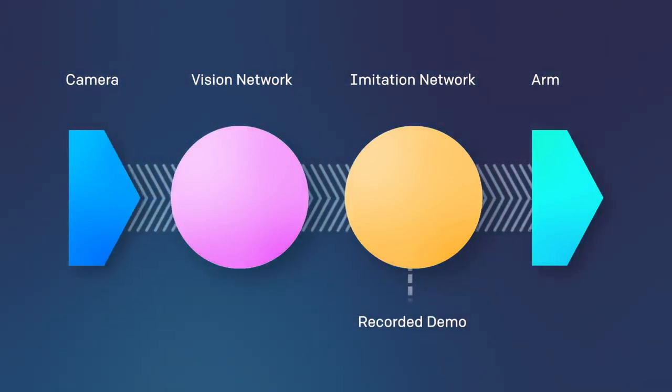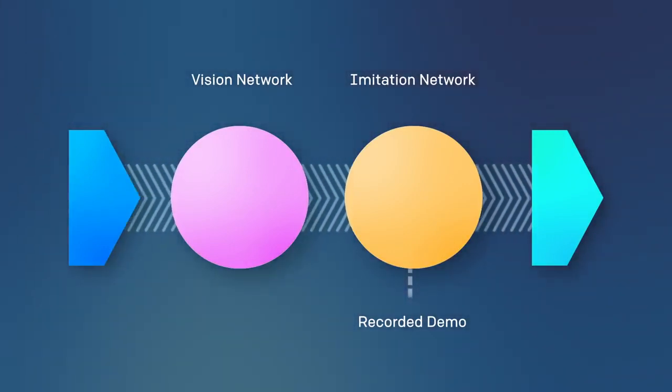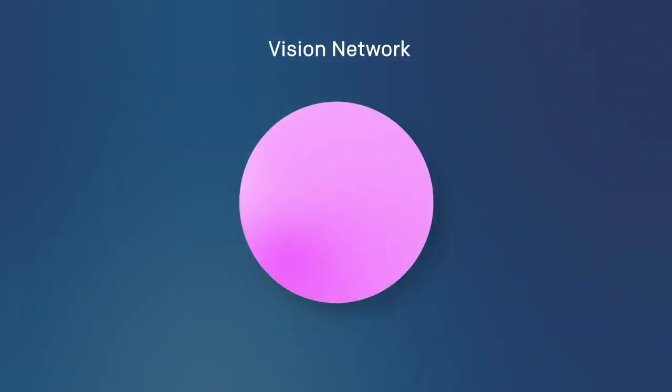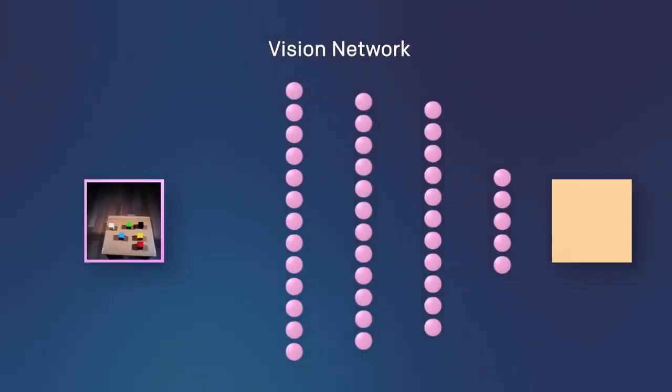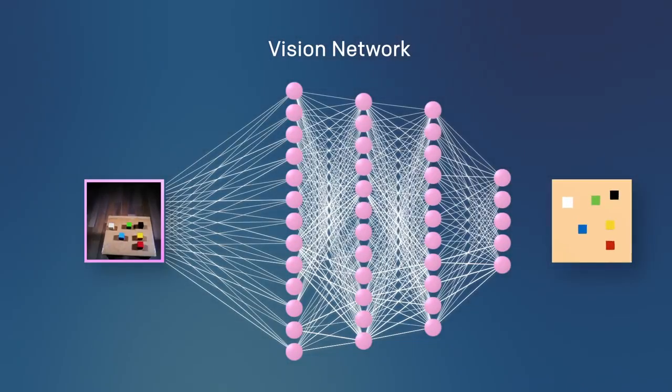The camera image is first processed by the vision network. Then, based on the recorded demonstration, the imitation network figures out what action to take next. Our vision network is a deep neural net that takes a camera image and determines the position of the blocks relative to the robot.